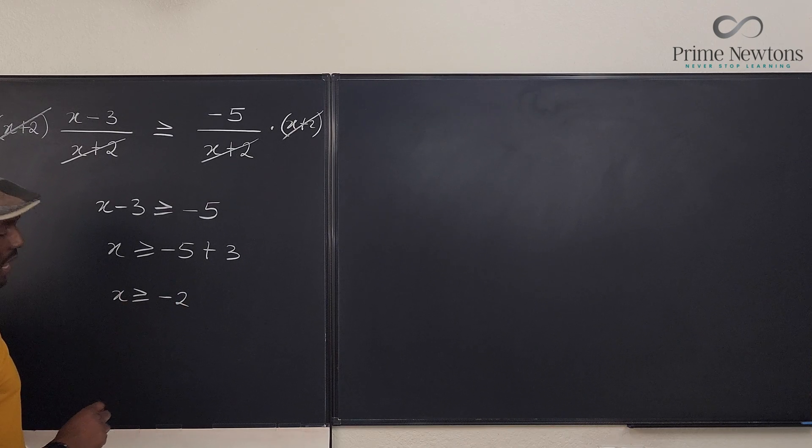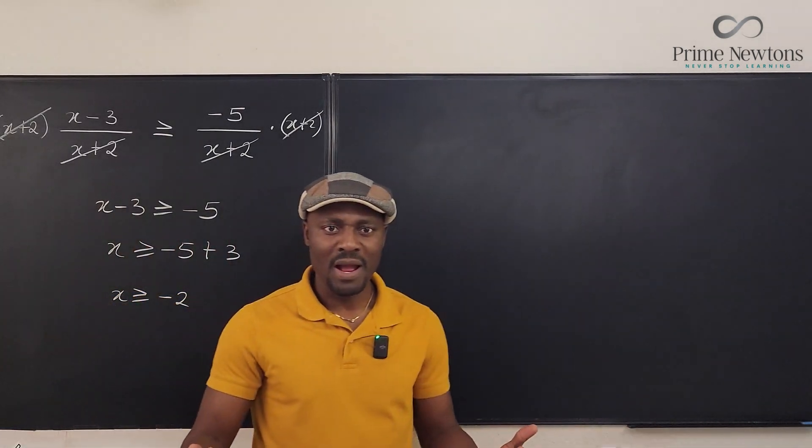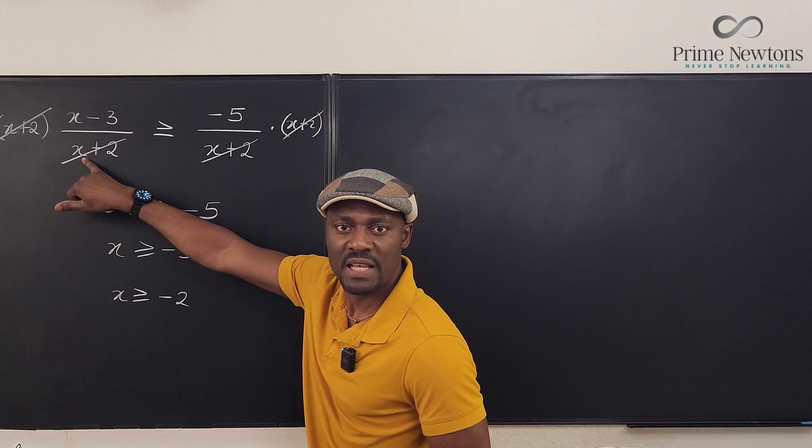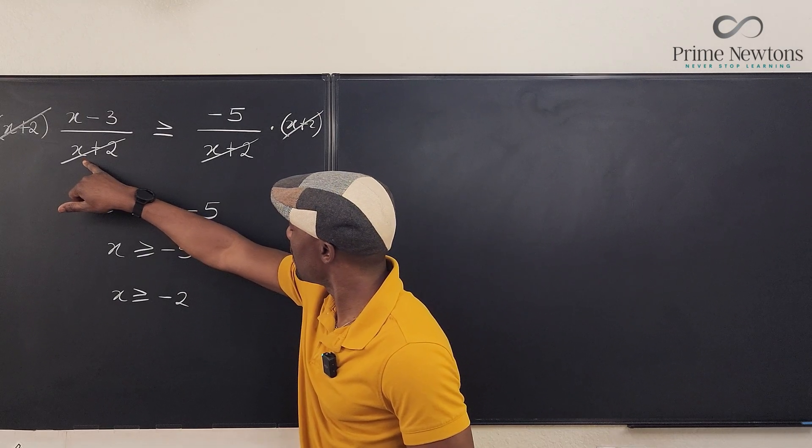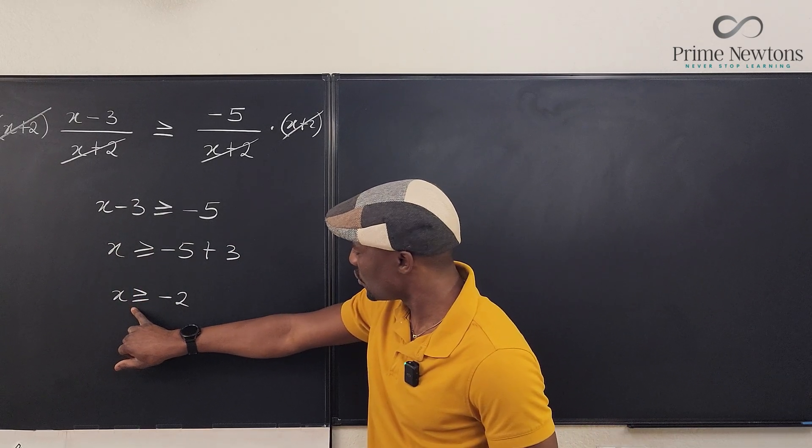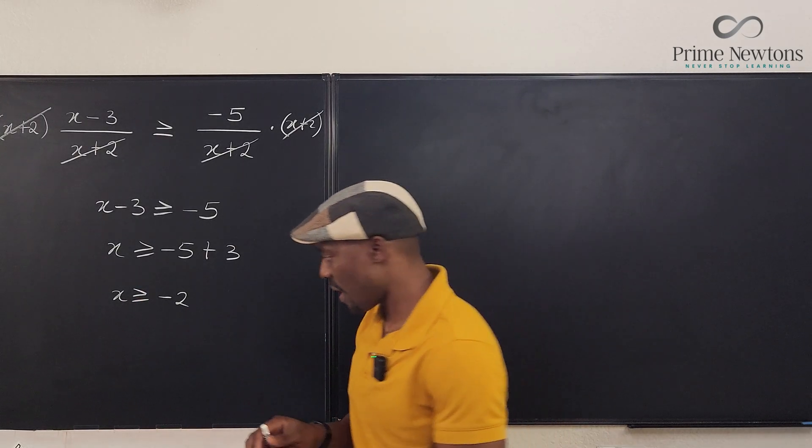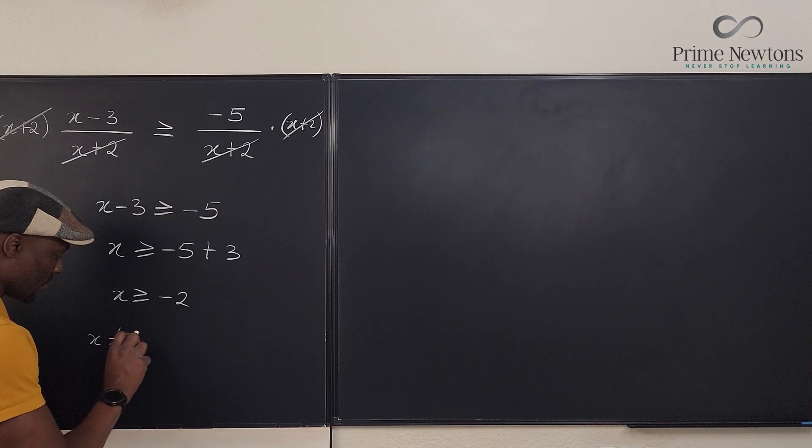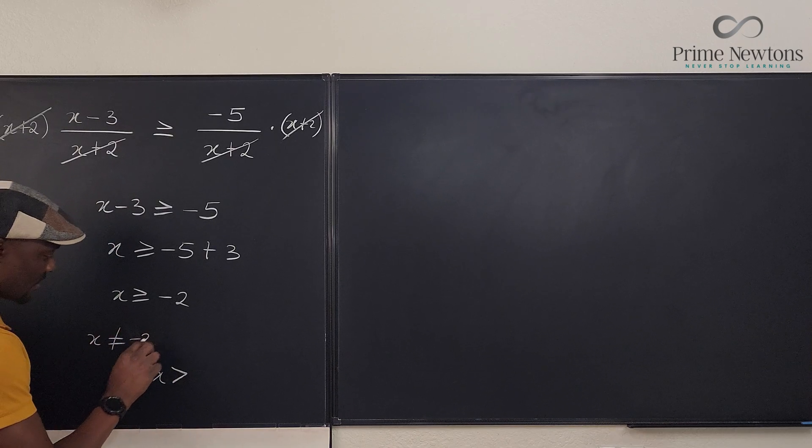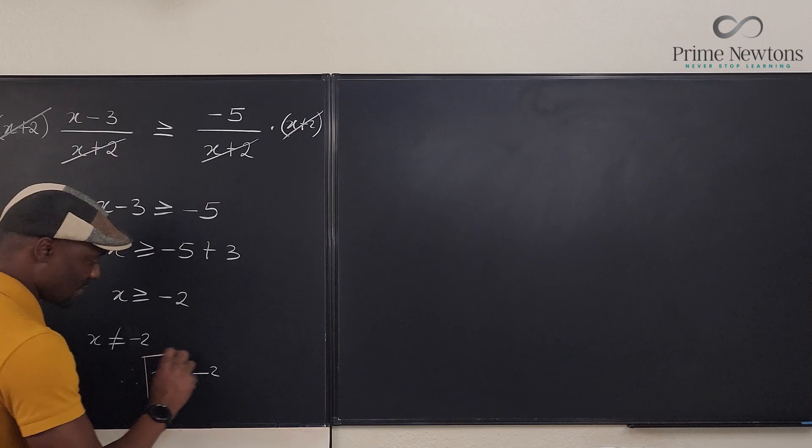Yeah. So this is your answer. But then you go, oh, I'm so smart. x cannot be negative 2 because if x is negative 2, then this would be undefined. So it means my answer cannot include negative 2. So my answer is x is greater. I have to remove the or equal to option. So x has to be greater.